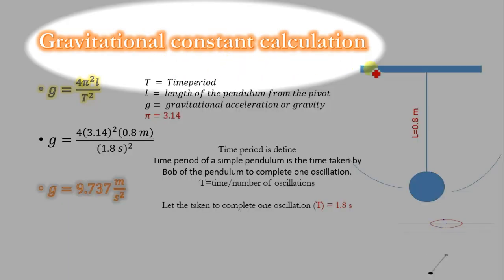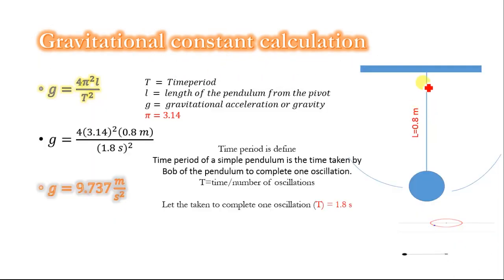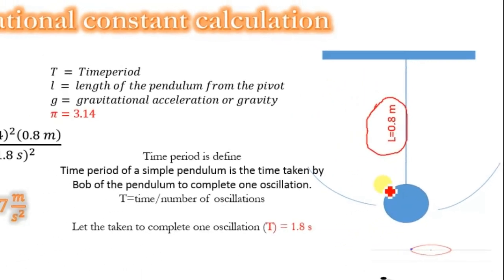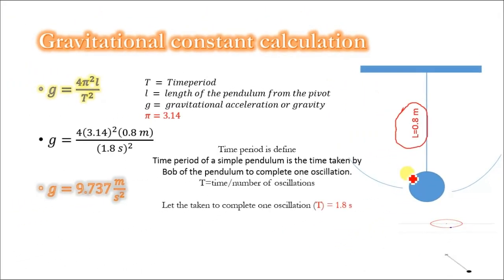Gravitational constant calculation: Let's suppose the length of the pendulum l = 0.8 meters and the time taken by the bob to complete one oscillation T = 1.8 seconds. Now, putting these values into the equation...